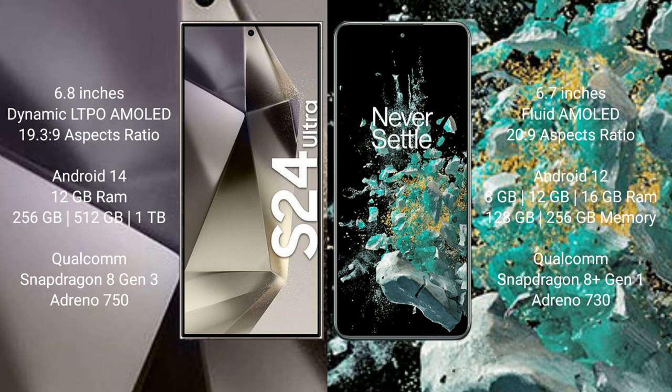The Samsung Galaxy S24 Ultra runs on the Android 14 operating system, while the OnePlus 10T runs on Android 12 operating system. The Samsung Galaxy S24 Ultra comes with 12GB RAM and 256GB, 512GB, or 1TB internal storage, powered by the Snapdragon 8 Gen 3 processor and GPU Adreno 750.